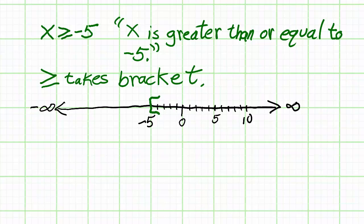I make a right-facing bracket at negative 5 and an arrow going off to the right. This sign faces to the right, and the arrow on our graph faces right.